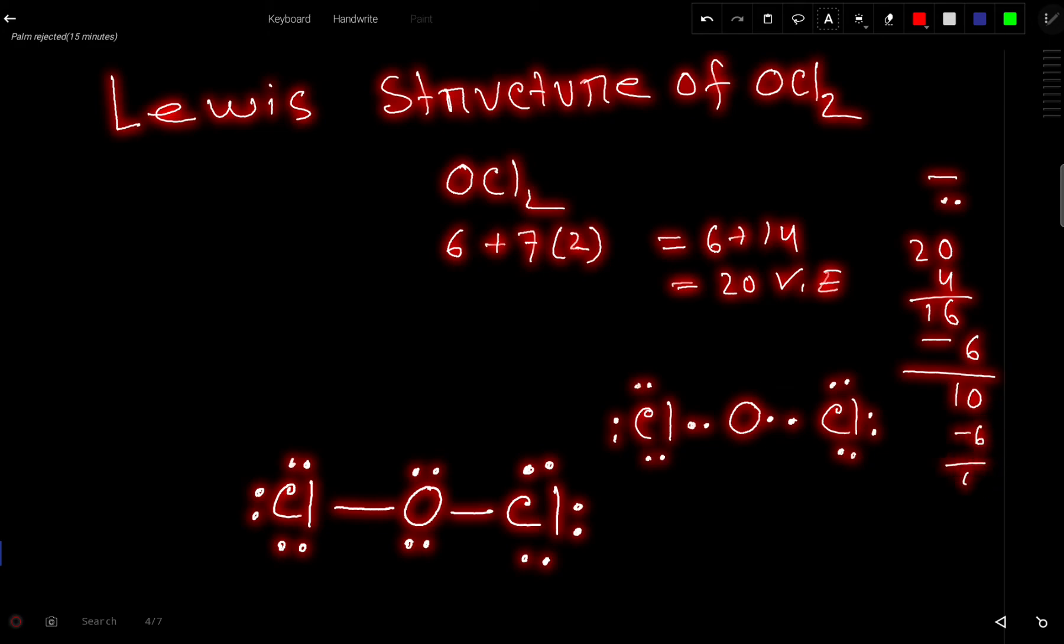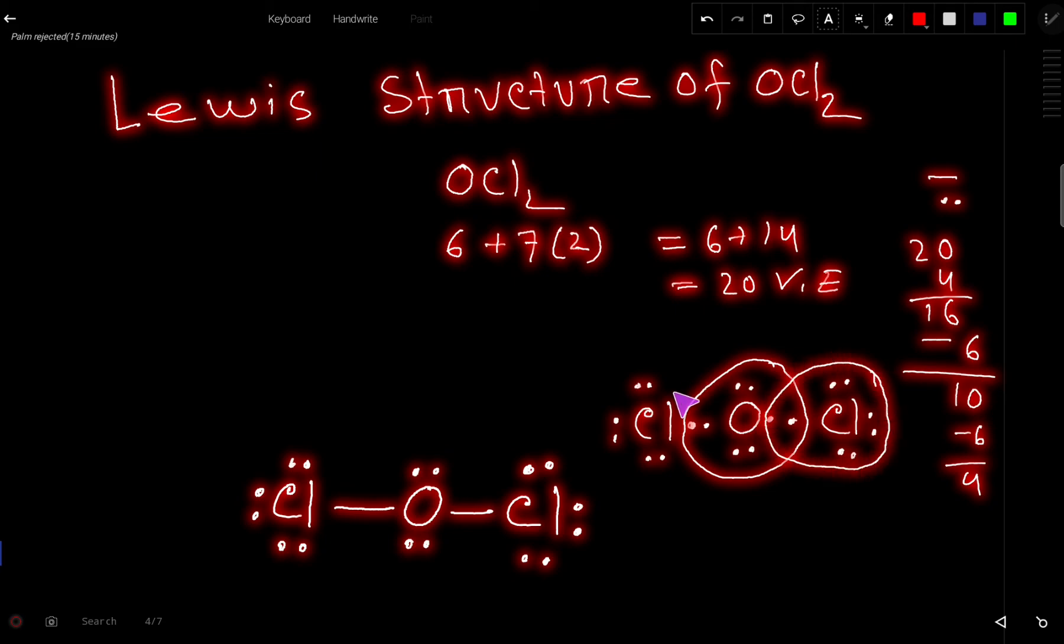Now we have 4 valence electrons that will come to the center. Now observe this oxygen has 8. This chlorine also has 8 and this chlorine also has 8.